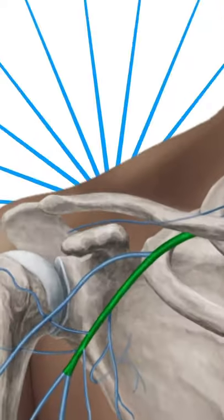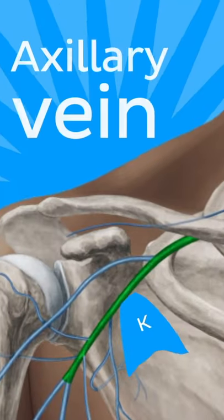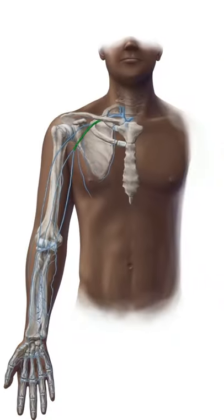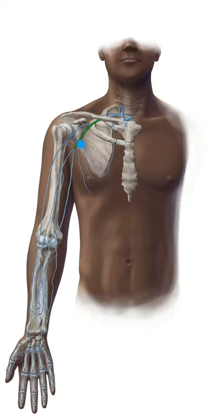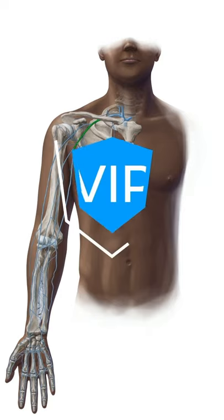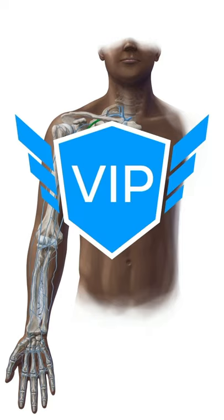This is the almighty axillary vein. Deoxygenated blood from the axilla, upper limb, and thorax pass through this vein before it reaches the heart. So yeah, it's that important.